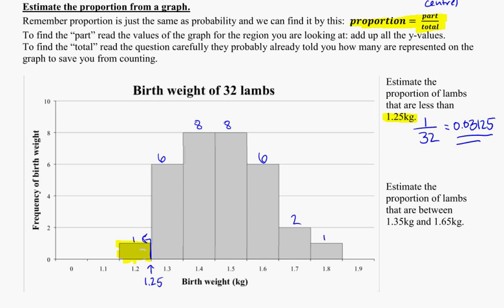The next question, they ask us to estimate the proportion of lambs between 1.35 kgs and 1.65 kgs. So first thing we might do is figure out what that is in the scale. There's the 1.3, and then 1.4. So 1.35 is halfway between,